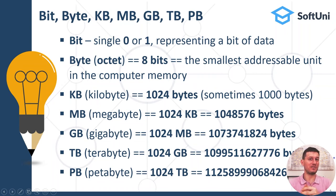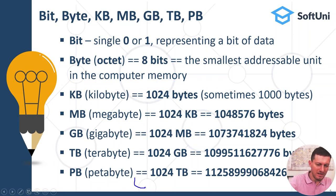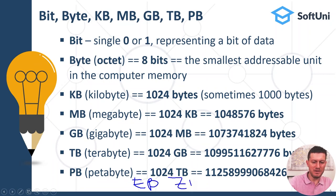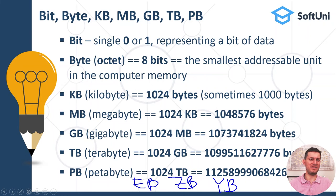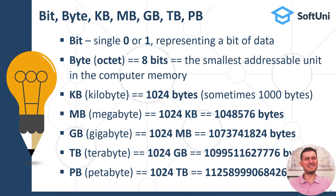The next units after petabyte are exabytes (EB), zettabytes (ZB), and yottabytes (YB). It's unlikely that you will handle such amounts of data soon, but basically these are the measurements used in computer science and software engineering.